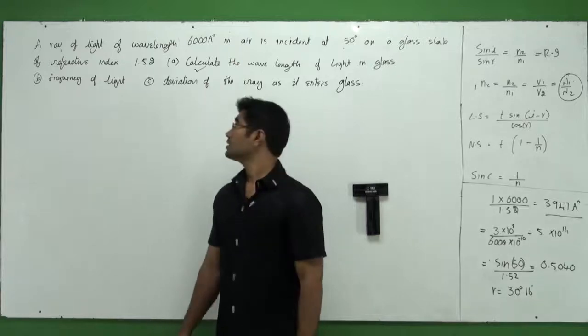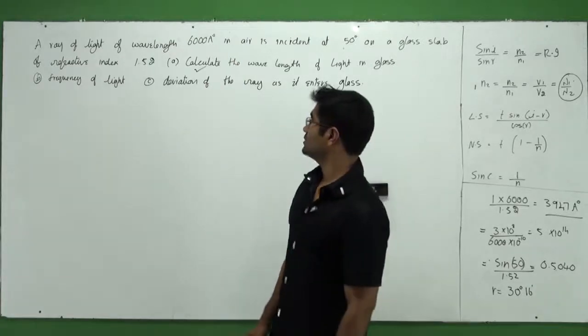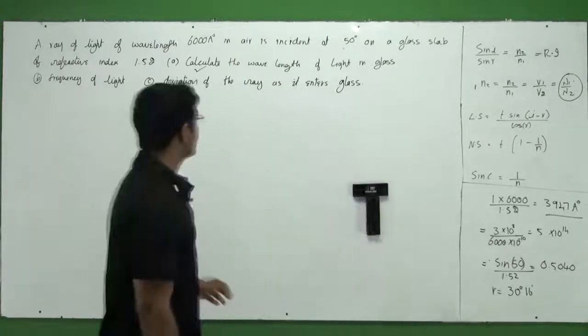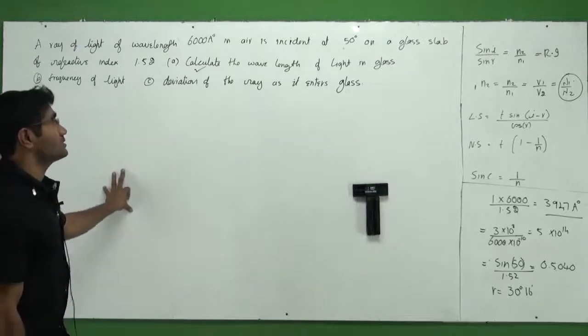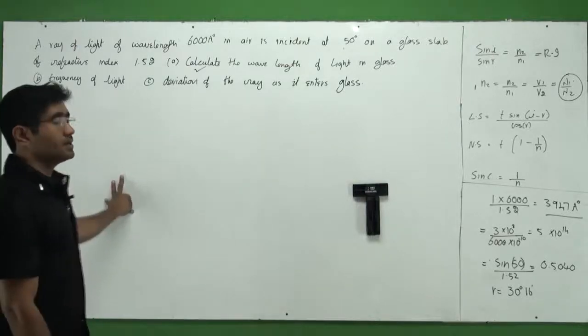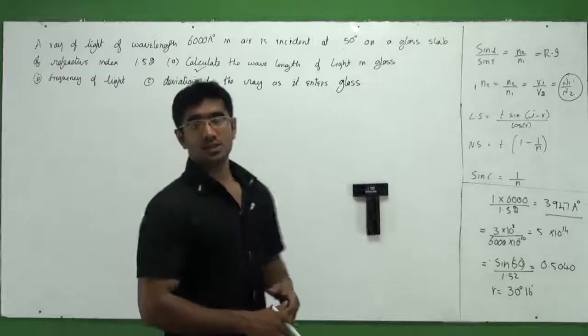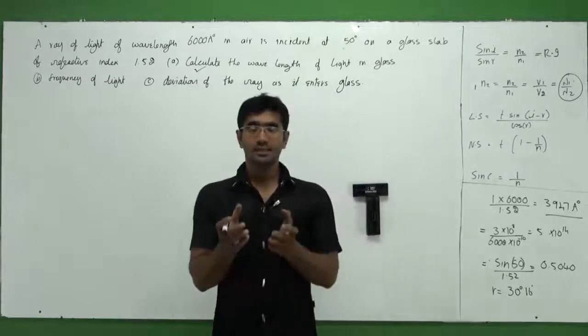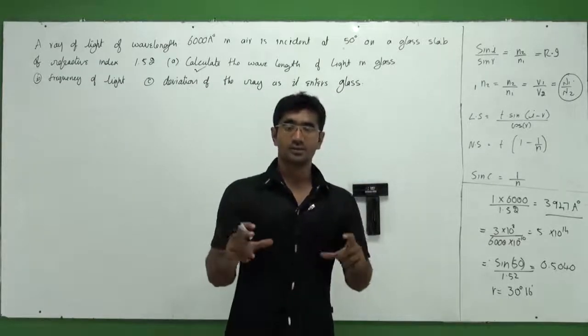All right guys, now let's see how to work with the problem on the board. It says a ray of light with wavelength 6000 Angstrom in air incident at 50 degrees on a glass slab. The first thing we need to understand about solving a problem is to collect the data from the question and draw the diagram.